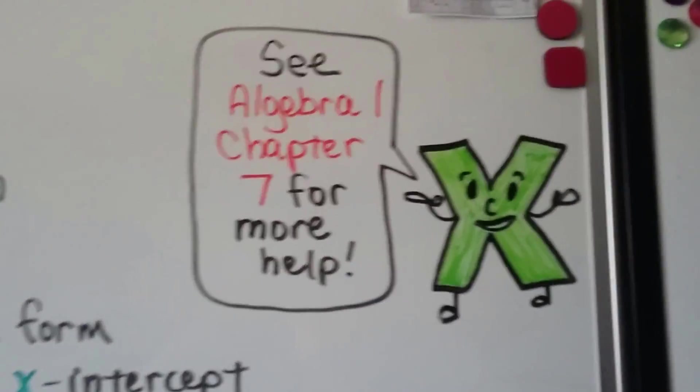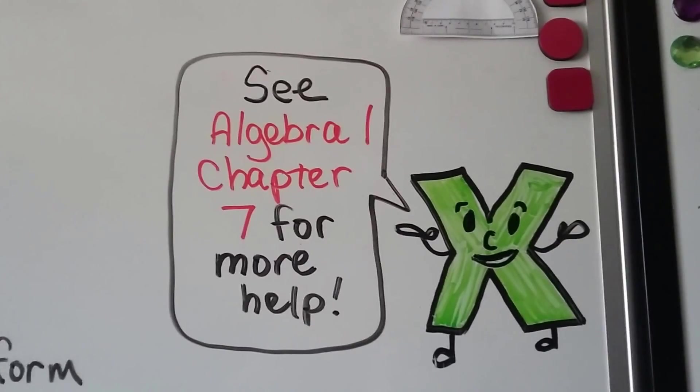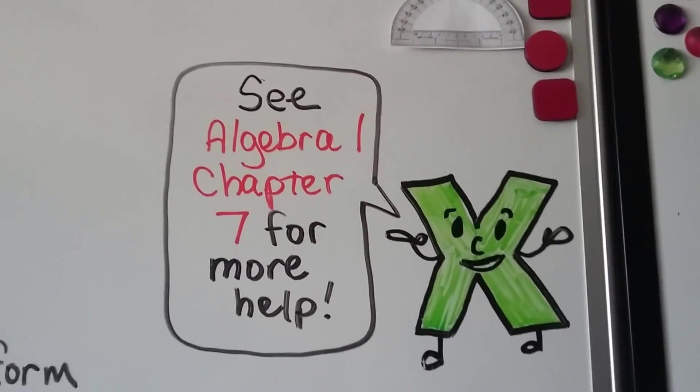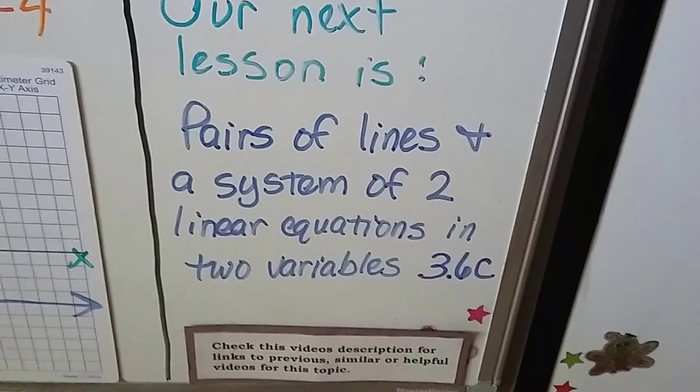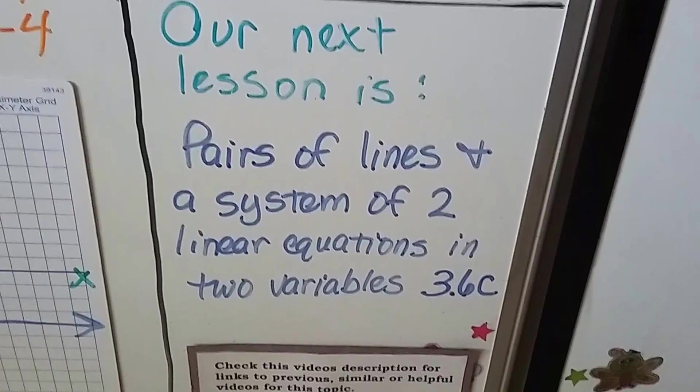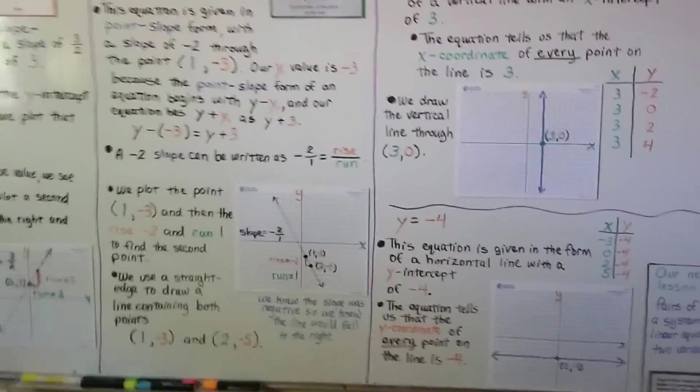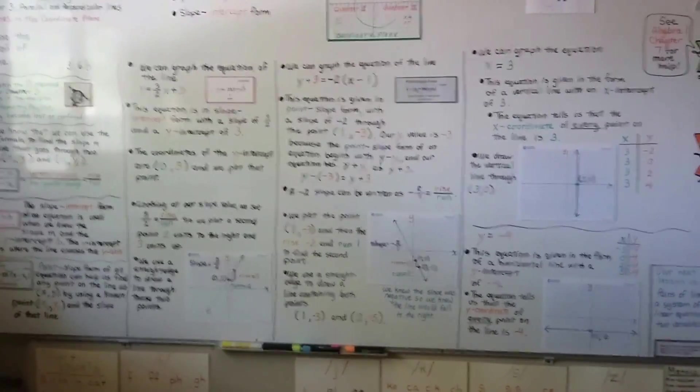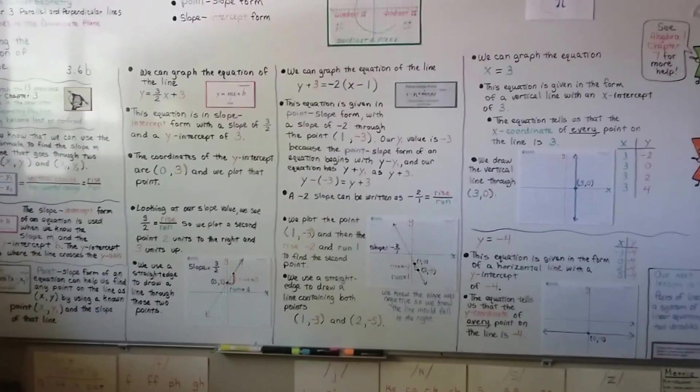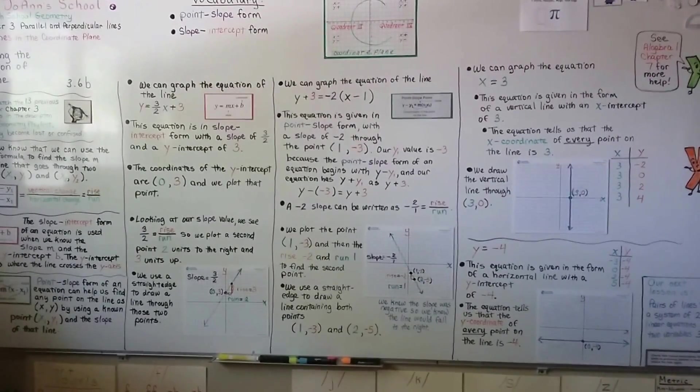Now, we covered all this in Algebra 1 in Chapter 7. You should take Algebra 1 before geometry. If you don't remember or you need a quick review, I'm going to have a link to the Chapter 7 Algebra 1 short playlist in the description so you can watch them. Our next lesson is pairs of lines, a system of two linear equations in two variables. That'll be 3.6c. We have only one more after that, then we'll be at Chapter 4. I hope you remember this from Algebra 1. I'll see you next time. Have a great day. Bye.